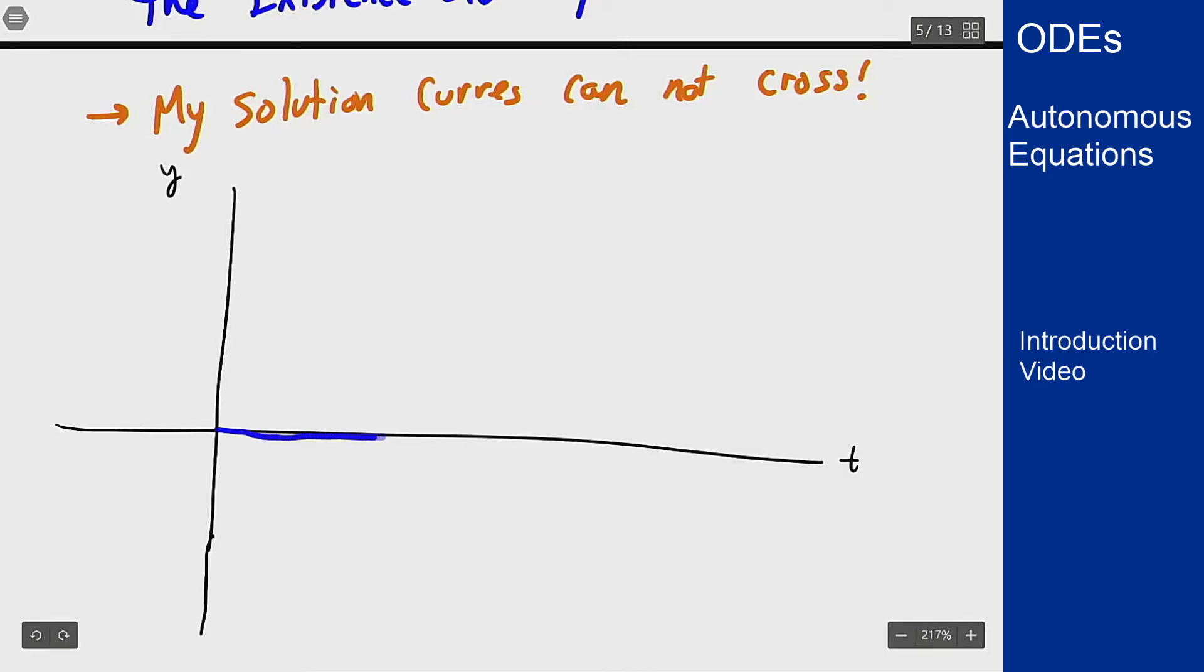So I have a solution that just stays along the axis here. So is y equals 5 and so is y equals minus 3. These are solutions. Now say I want to look at where y of 0 is 1 which is a point somewhere in here. What's going to happen from there?